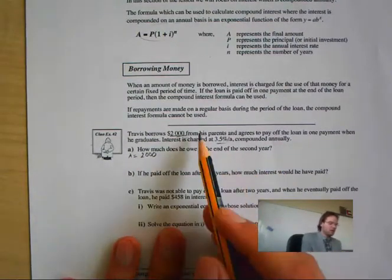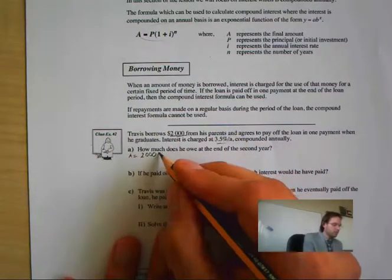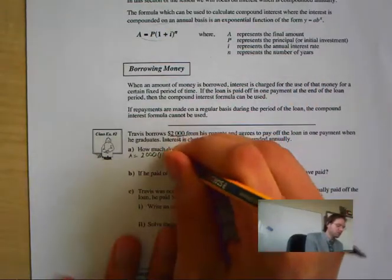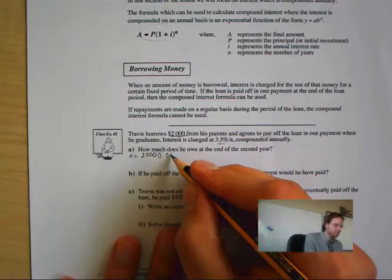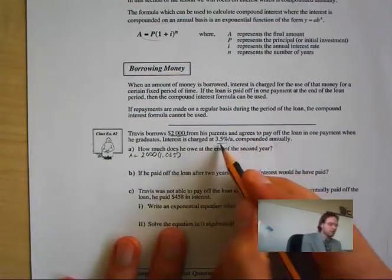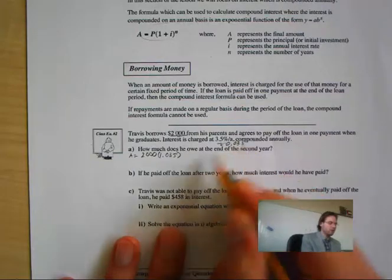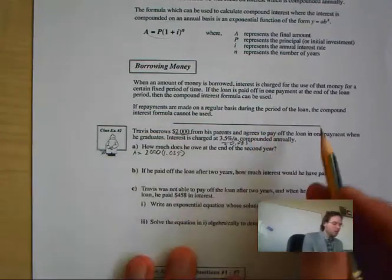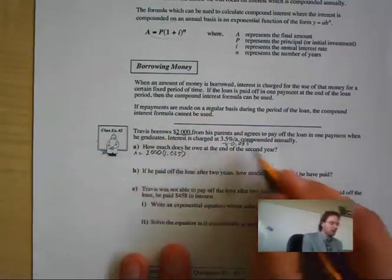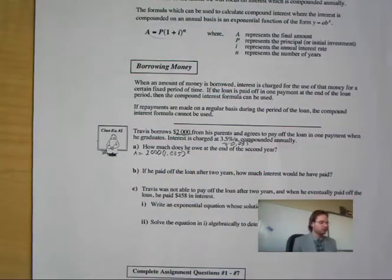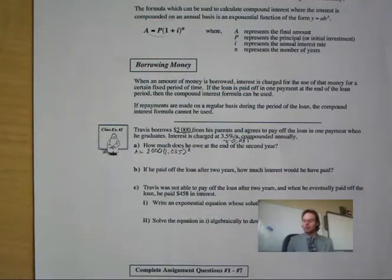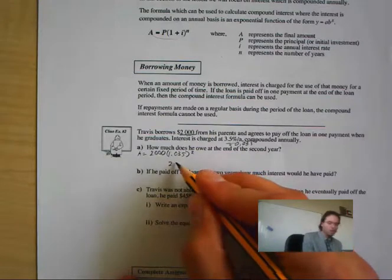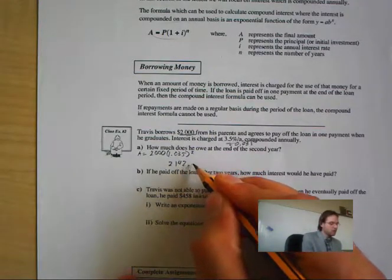What is his interest? Well, it is 100% plus 3.5%, so it is 0.035. Because this is equivalent to 0.035, I add that to one — which is 100% — giving me 1.035. And how much is this compounded? Annually. How many years are there? Two years. Now I put that together and I end up getting $2,142.25.